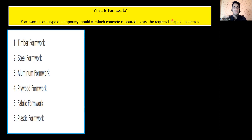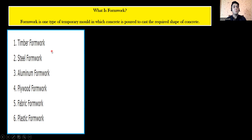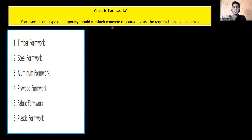To put it simply, just as engineering is a general term that includes civil, mechanical, electrical, and other branches, formwork is also a general term that includes timber formwork, steel formwork, aluminium formwork, plywood formwork, fabric formwork, plastic formwork, and so on. On site, when people say 'shuttering is being done,' they mean formwork is being placed — it could be wooden, steel, or aluminium.